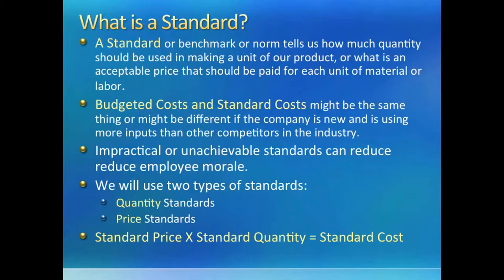If companies try to force unachievable standards on employees, they will get frustrated because standards cannot be achieved with their best effort. We will talk about two types of standards or benchmarks. Quantity standards tell us how much of each material should be used to make one product. Price standards tell us how much should be paid for each unit of raw material or labor. Budgeted or standard cost is just standard price times standard quantity.